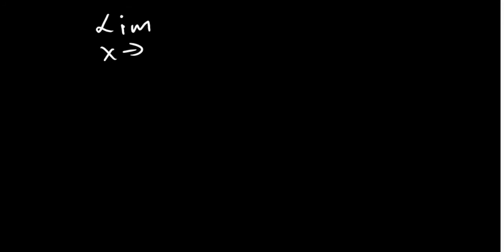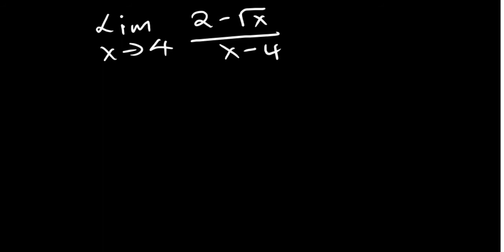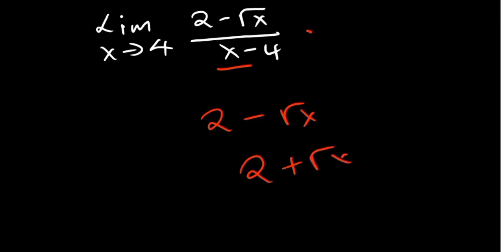Now let's say you have the limit as x approaches 4 for 2 minus the square root of x, divided by x minus 4. If you plug in the value of x, the denominator becomes zero, so it's undefined. In this case you can't factorize the numerator, so we want to find a way to deal with the x on the bottom. The best way to simplify this is by multiplying by the conjugate. When you have 2 minus root x, the conjugate is 2 plus root x.